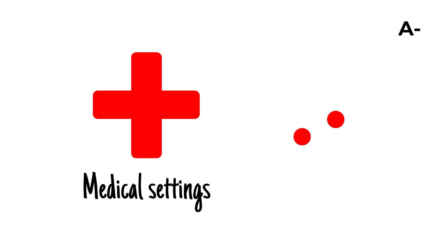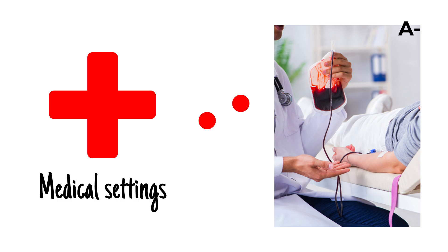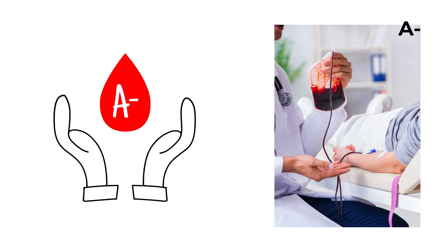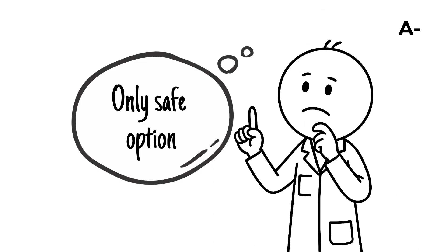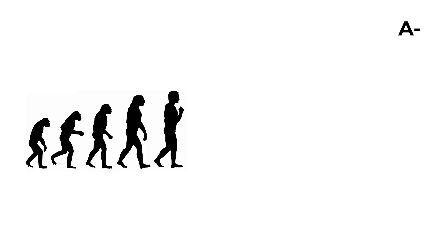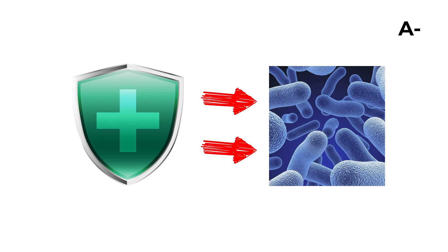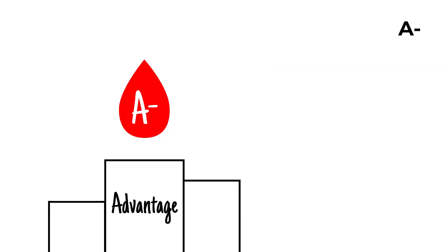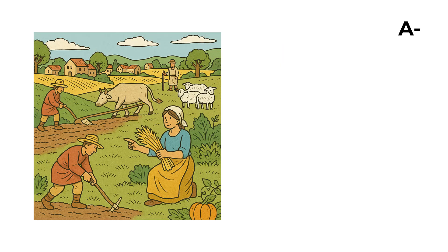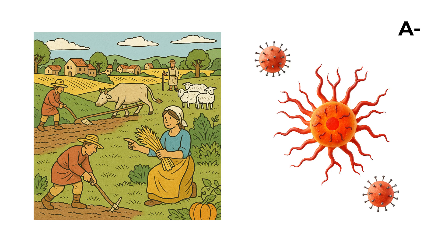In medical settings, this scarcity gives every A negative donation special importance. Sometimes it's the only safe option for a patient in need. From an evolutionary standpoint, the A antigen has been linked to stronger immune defenses against bacterial infections, offering an advantage in early farming societies where close living conditions increased exposure to disease.